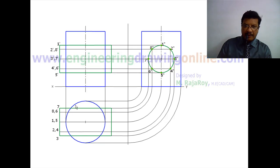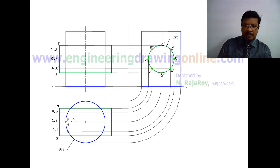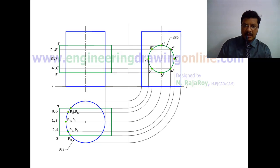Now identify the intersection points of this curved surface and these generators. This curved surface is intersecting generator 1 and 5 somewhere here, so this is P1, P5. Here this curved surface is intersecting generators 2 and 4, so here you will get P2 and P4. Here you will get P3. Similarly here you will get P8, P6, and here P7.